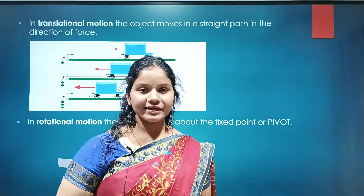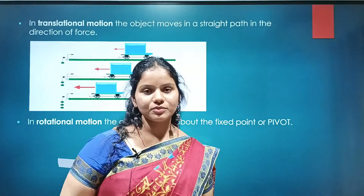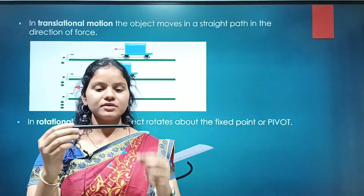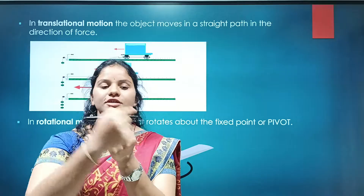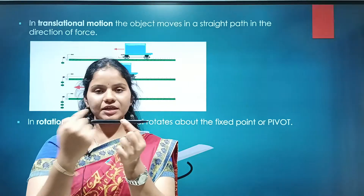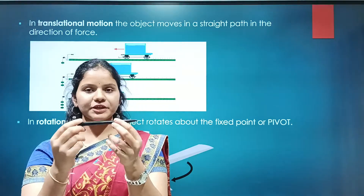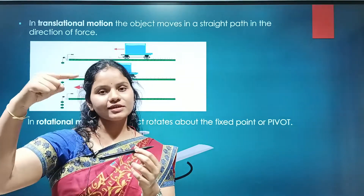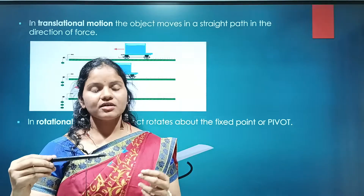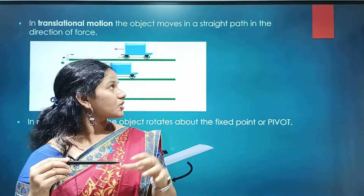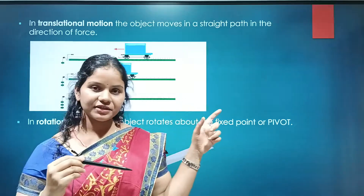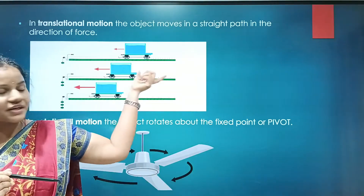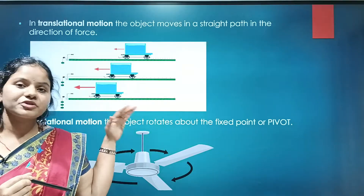What is linear motion or translational motion? Consider this pen as an example. Here it is not fixed at any point — it is completely free to move. When you apply a force in any direction to this object, it will move in a linear path or a straight line. Such motion is called linear motion or translational motion. For example, a truck moving in a straight path.